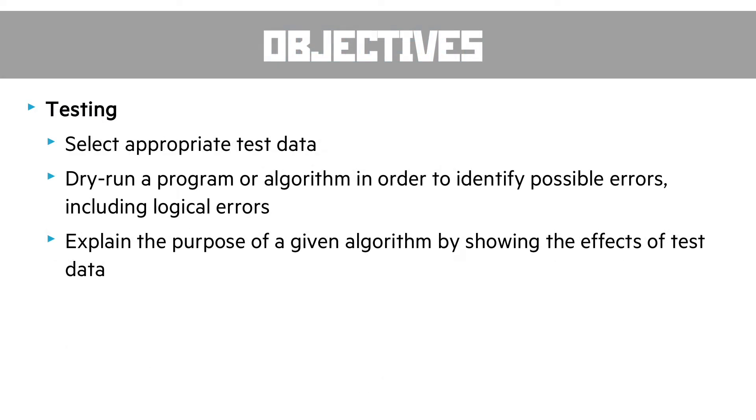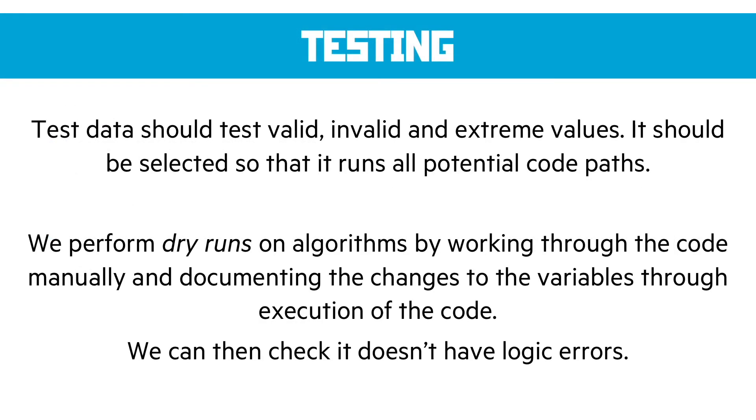Our testing objective, then, is all about selecting appropriate test data, dry-running a program or algorithm in order to identify any possible errors, including logical errors, and then explaining the purpose of a given algorithm by showing the effects of the test data. So, what should test data be? How do we select it? Well, we need to select from three pools. We need valid, in other words, data that should work correctly, invalid data, data that should produce an error message that we expect to see, and extreme values. Extreme values are where we have any kind of range. We'll pick the lowest and largest valid values to test to make sure that we've used our less thans, greater thans, or inequality symbols correctly in our code. We also need to make sure that we test all potential code paths. Now, that's reasonably straightforward in something like an app. But when we get to a video game, and especially things like open world video games, where we've got almost an infinity of options, it is very difficult to make sure that we test all potential code paths.